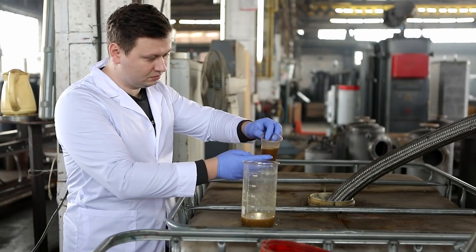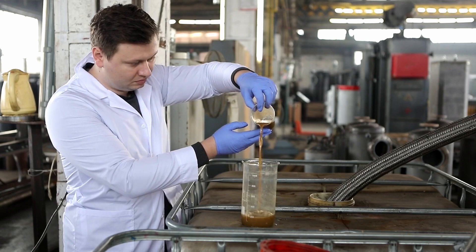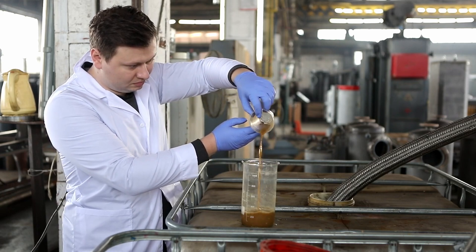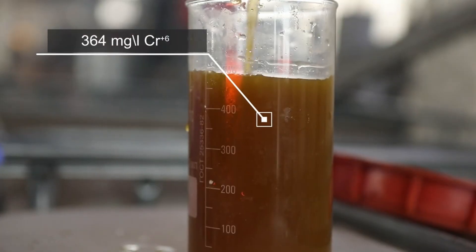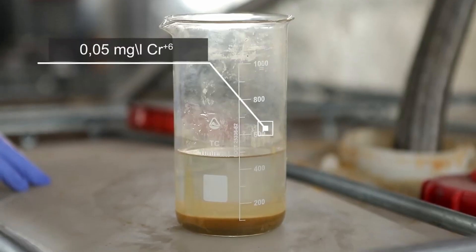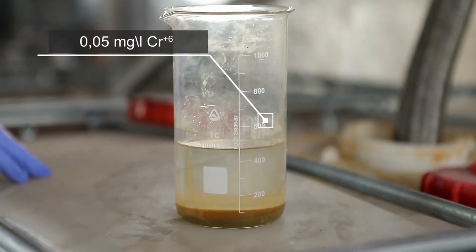In the samples taken, the concentration of hexavalent chromium was almost 7,300 times as high as the permissible rate: 364 mg per liter at the rate of 0.05 mg per liter.